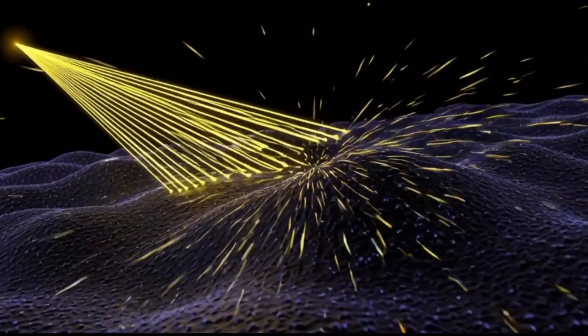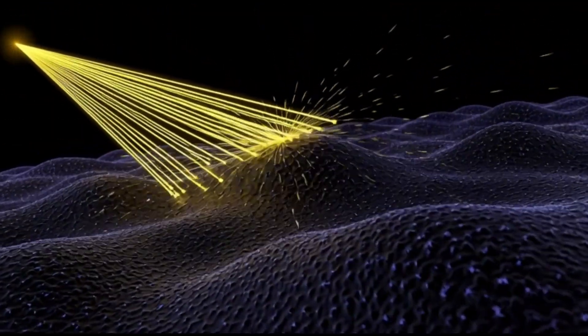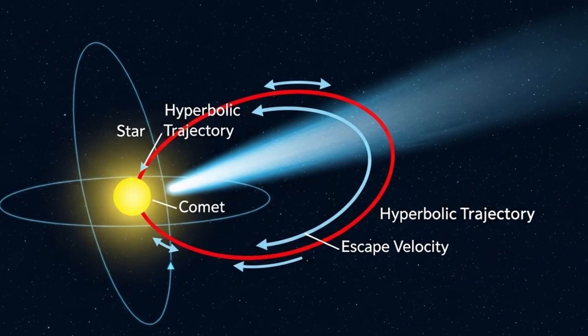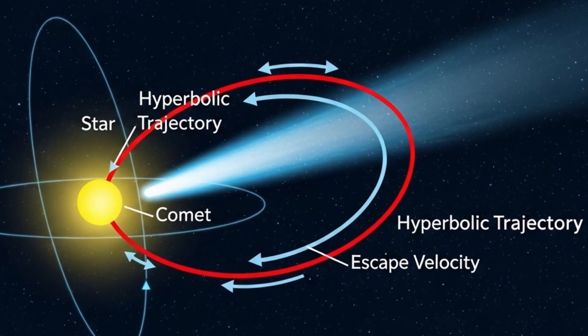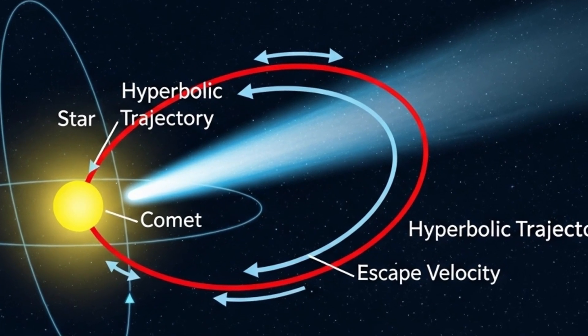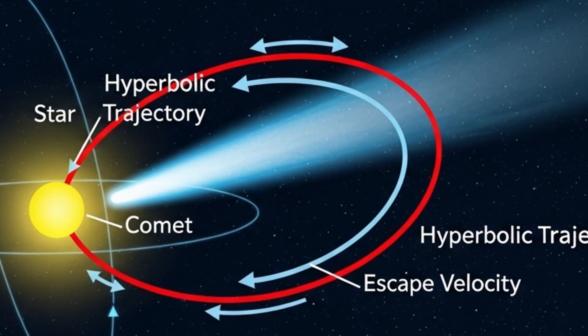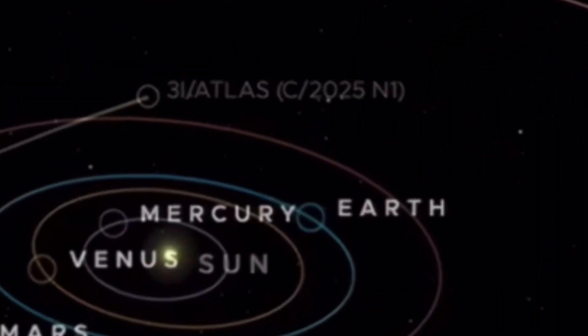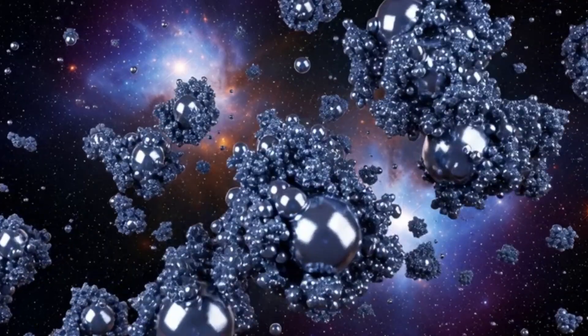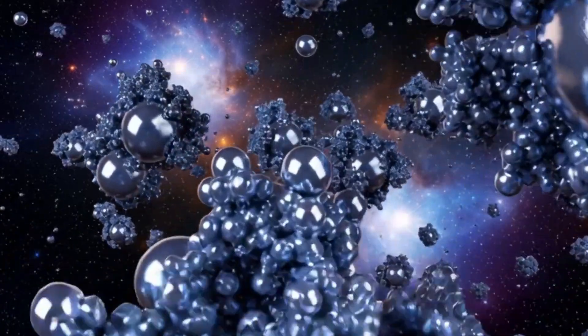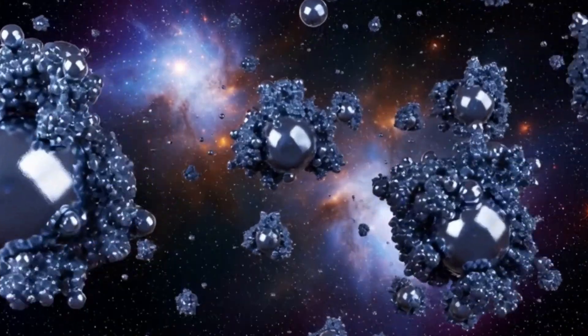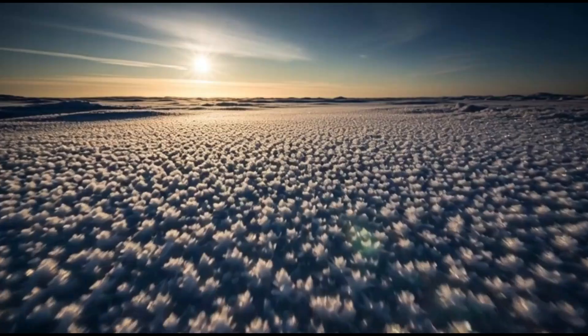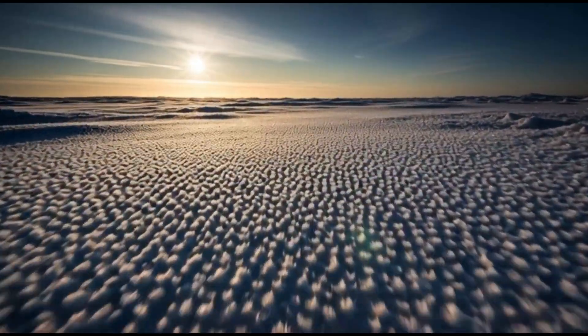But the most bizarre sight wasn't in its chemistry. It was in its shape. The tail of the comet itself began breaking another rule of space entirely. The first images of its tail stopped scientists cold. Instead of streaming away from the sun, like every other comet we've ever seen, 3i Atlas's tail was pointing toward it. For a while, no one could explain it. The solar wind should blow dust and gas in the opposite direction. But here it seemed reversed, as if the sun's energy was pulling the material inward instead of pushing it away.